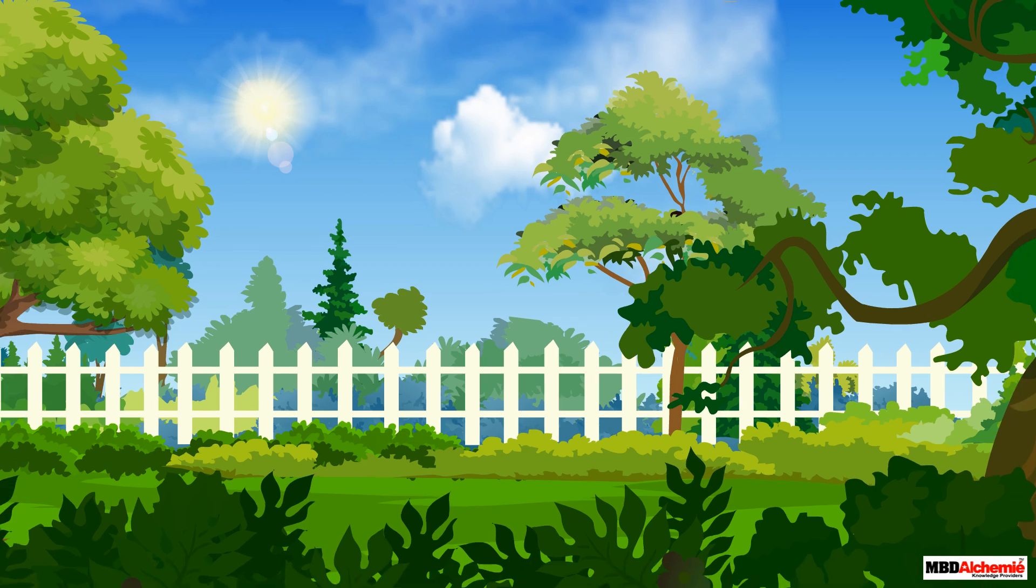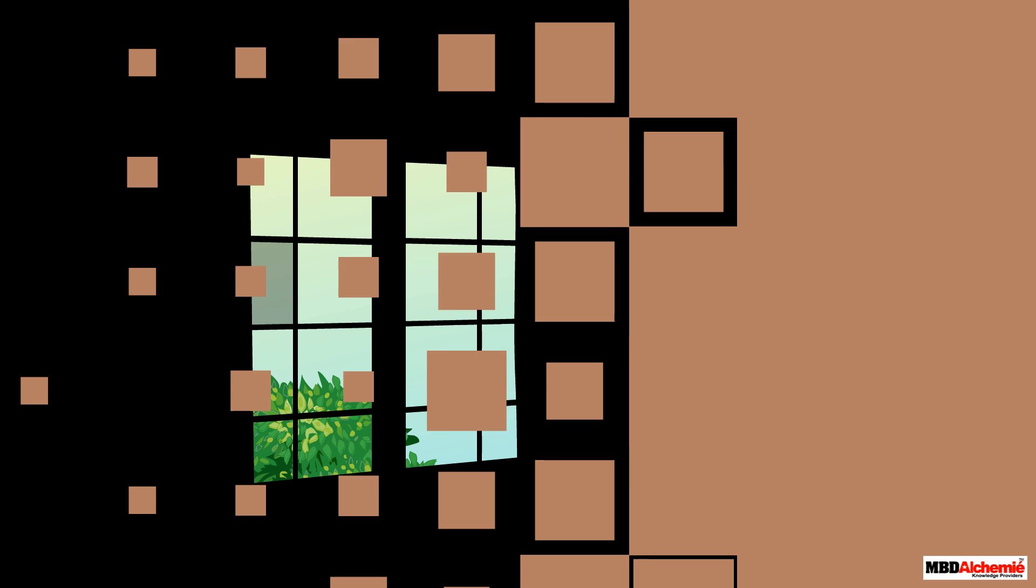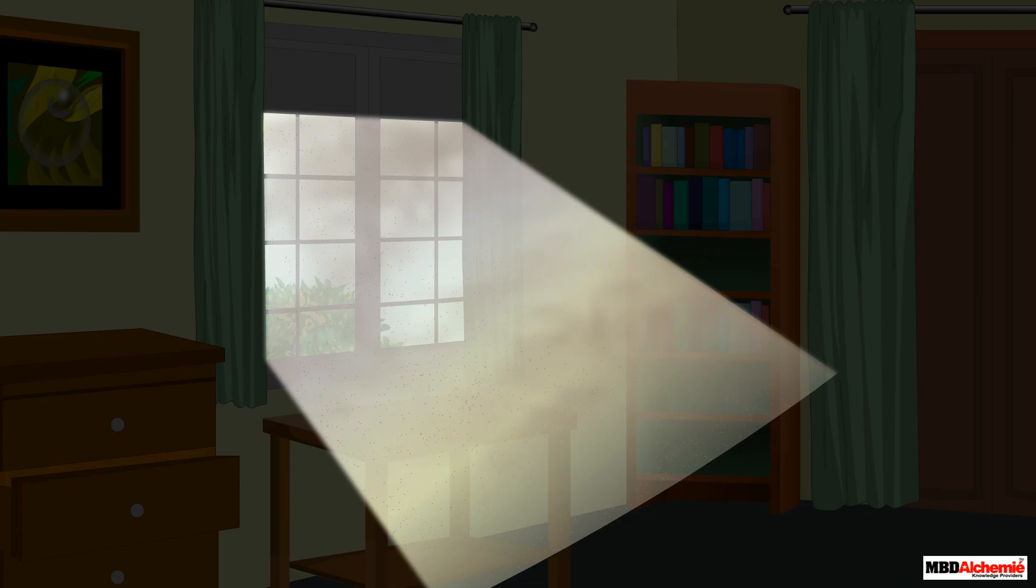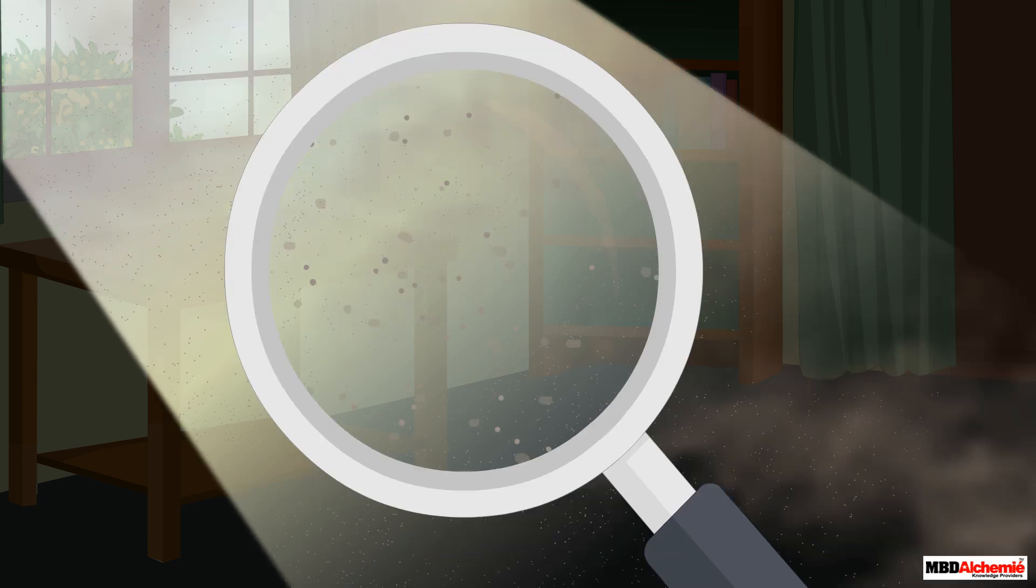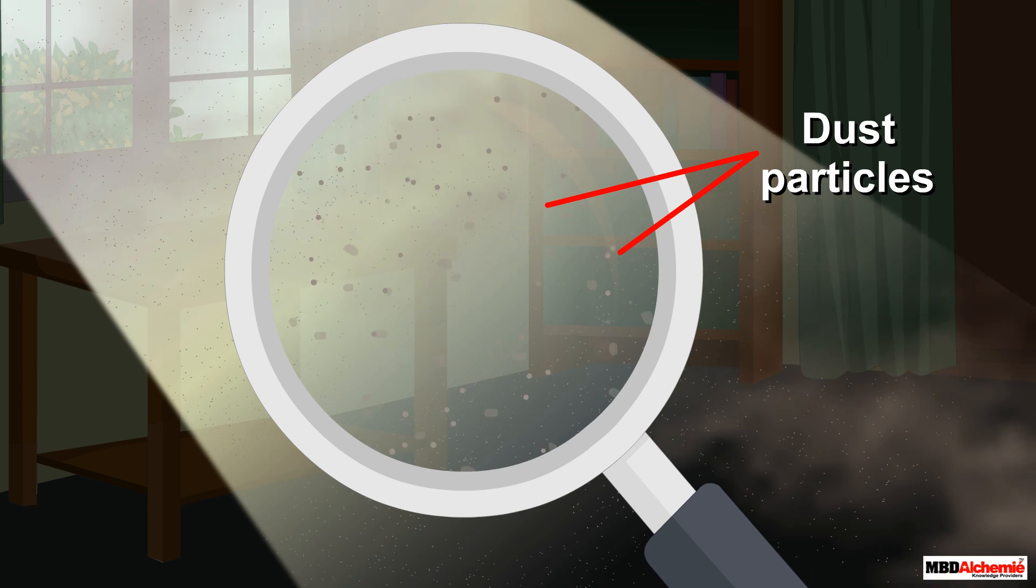Sunlight is all around us, but we cannot see its rays everywhere. We can see the sun rays clearly when sunlight enters a dusty room. Do you know why this happens in a dusty room? This happens due to the scattering of light by the dust particles present in the dusty room.